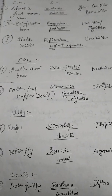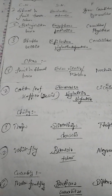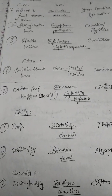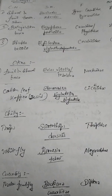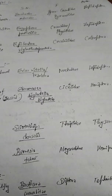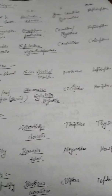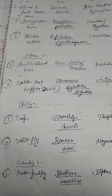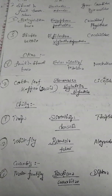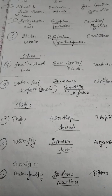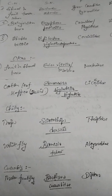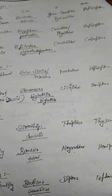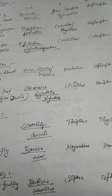Okra fruit and shoot borer is Erias vitella and Erias insulana, family is Noctuidae, order is Lepidoptera. Cotton leaf hopper — also found on okra — is Amrasca biguttula biguttula, family is Cicadellidae, order is Hemiptera.